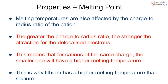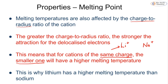Melting temperature can also be affected by the charge-to-radius ratio of the cation: the greater the charge-to-radius ratio, the stronger the attraction for the delocalized electrons. For example, taking lithium and sodium — both 1+ cations but different sizes, lithium being in period 2 and sodium in period 3 — the smaller cation with the same charge will have the higher melting temperature, because the delocalized electrons are closer to its nucleus, held more tightly, and therefore require more energy to break. So if you have the same charge, the smaller cation will have the higher melting temperature.